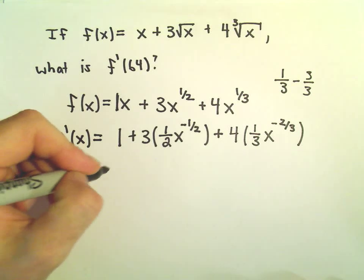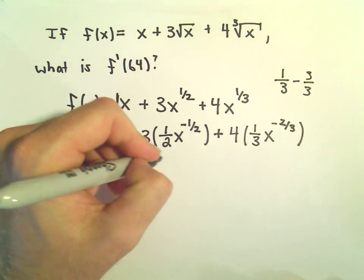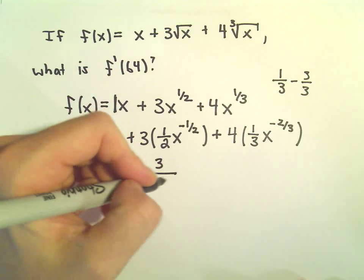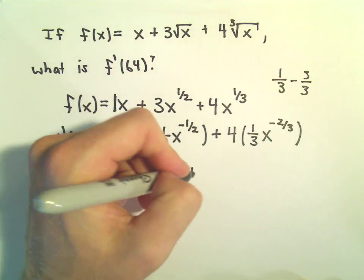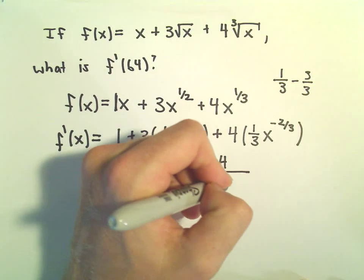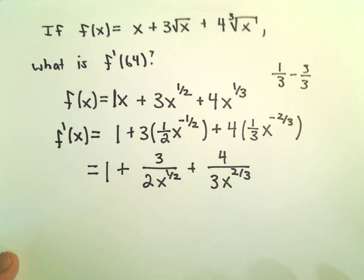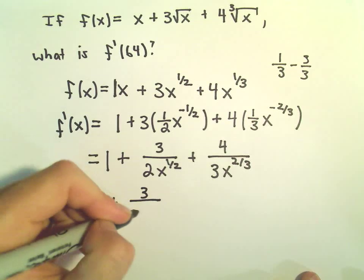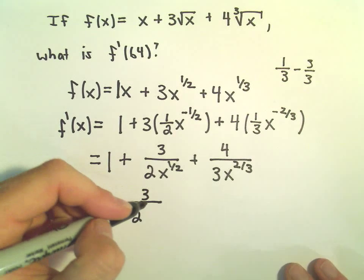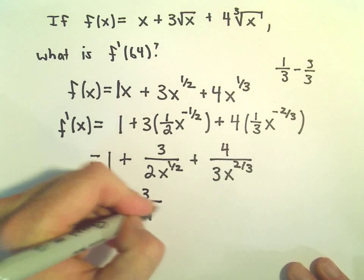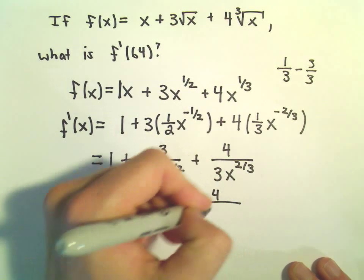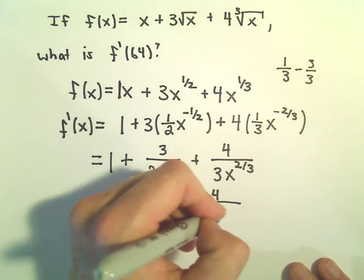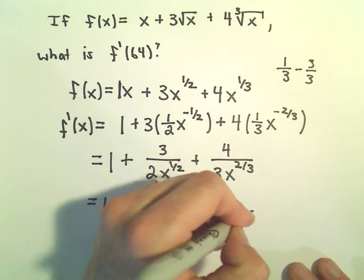Before plugging things in, I usually try to rewrite. So this would be 3 over 2 — the x to the negative 1 half we can put in the denominator as x to the positive 1 half. This would be 4 over 3 with x to the positive 2 thirds in the denominator. You could rewrite these as roots if you want — for example, the denominator could be written as the cube root of x squared.